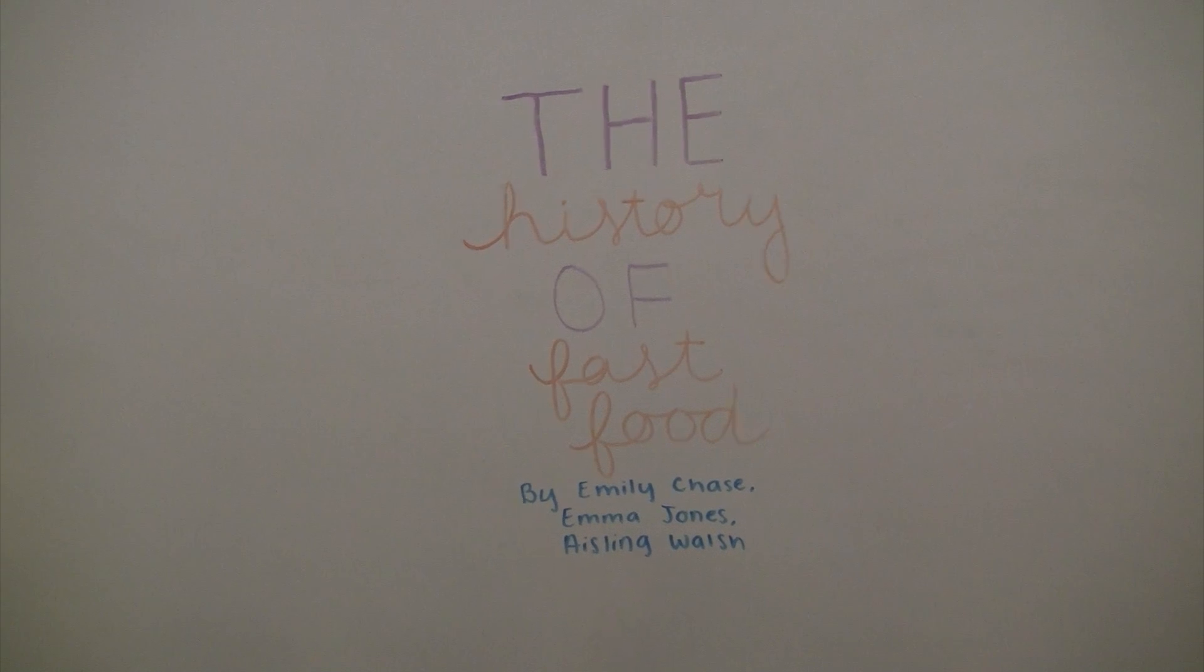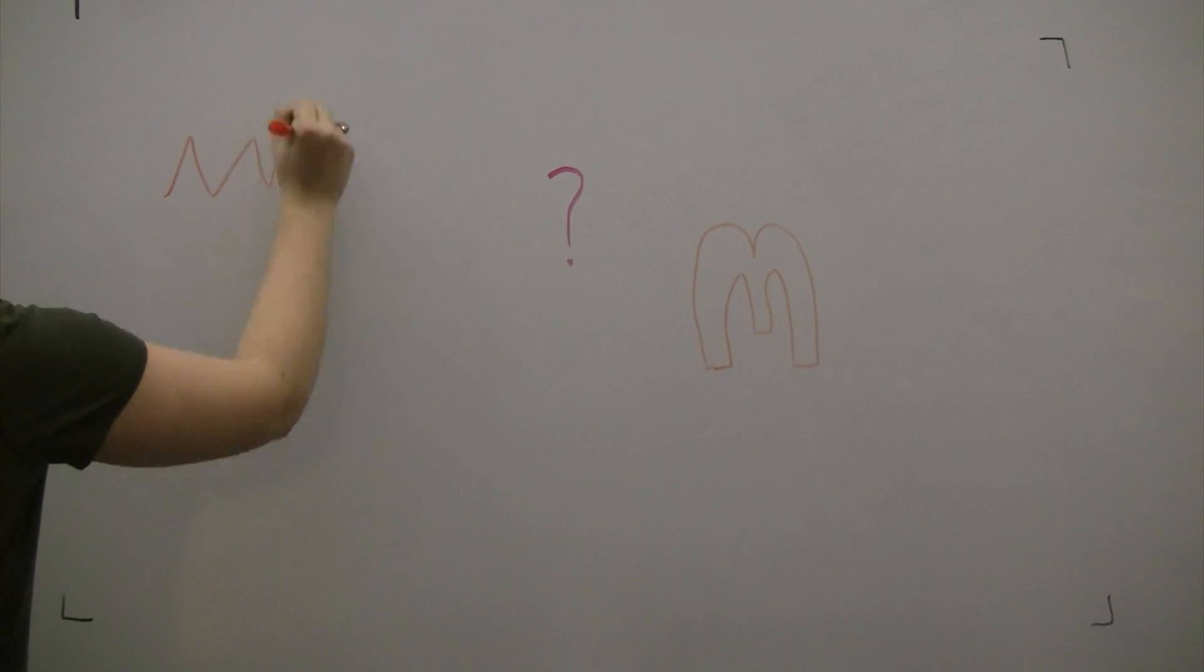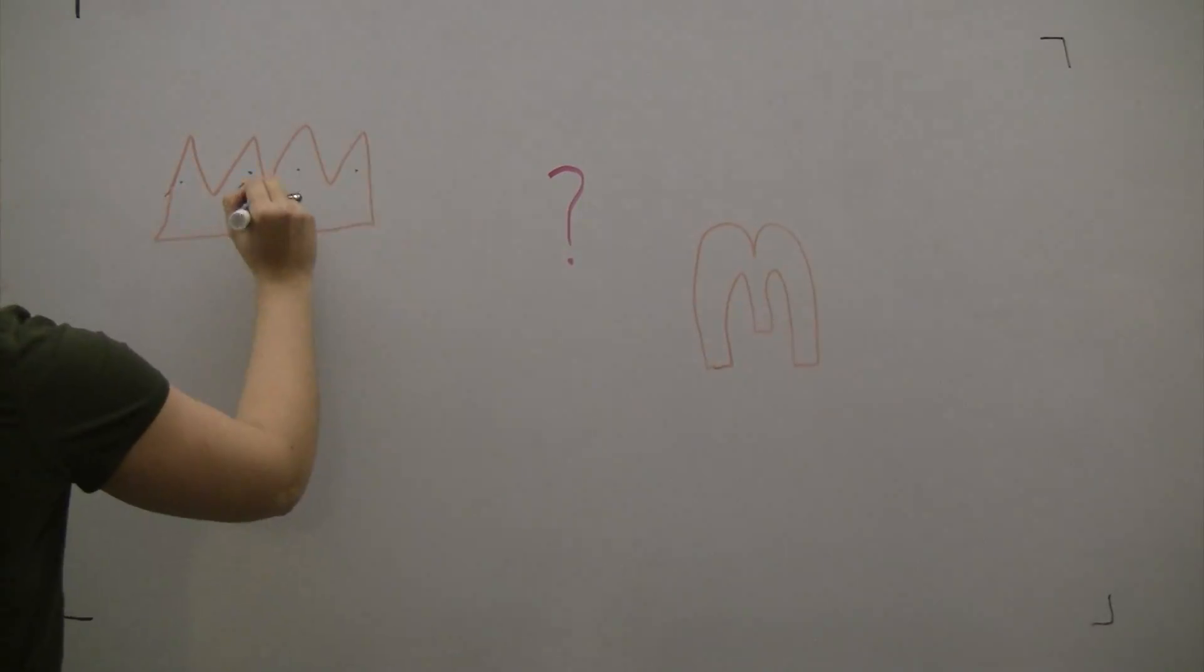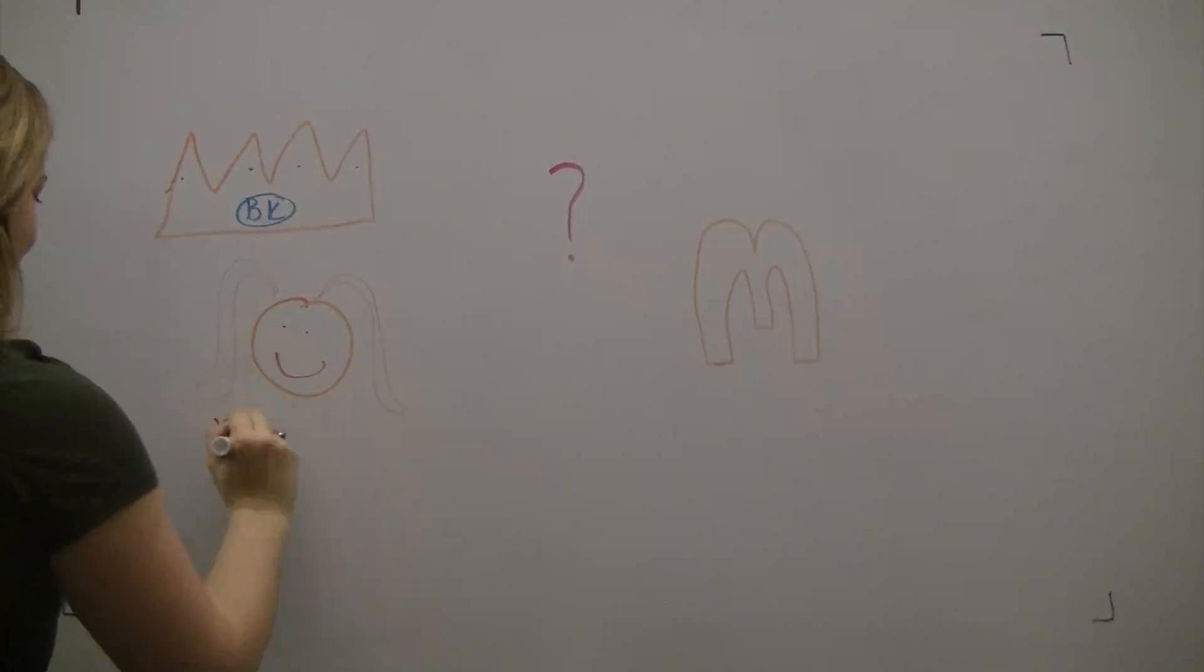What comes to your mind when you think of fast food? Do you think of McDonald's Golden Arches, the Burger King crown, or the Wendy's logo? Either way, fast food is such an ingrained part of American culture, so it's important to understand how it all came to be.